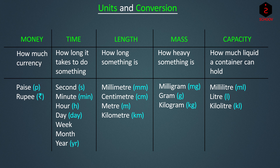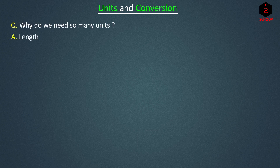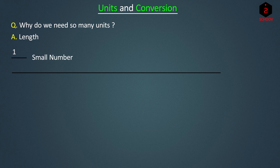The symbol of each unit is written in brackets. Now, let's talk about conversion of units. To understand conversion, we must first understand why we need so many units. For example, let's take length. Length can be very small or very large. We can say by common sense that we will require a small number to represent a short length and a large number to represent a longer length.